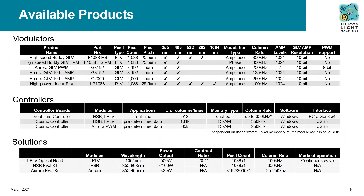We have a number of modulators, controllers, and solutions based on our technology available right now. The high-speed buddy line, marketing part number F1088, is available for phase or amplitude modulation with a 25.5 micron pixel pitch. For amplitude applications requiring smaller pixel sizes, our Aurora line allows for pixel pitches of 5 microns. The G8192 has very high channel count for high throughput applications, while the new G2000's lesser channel count enables cheaper, more compact optics.